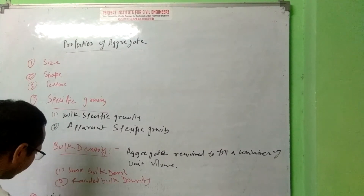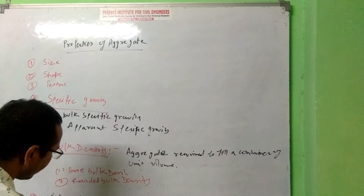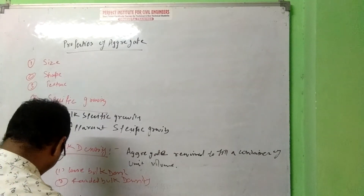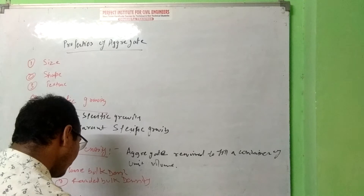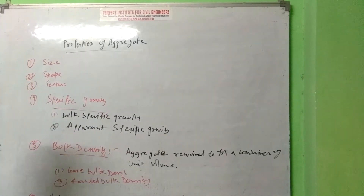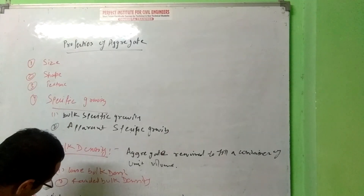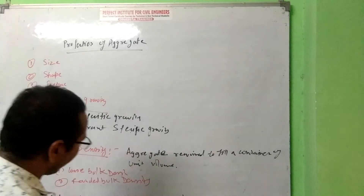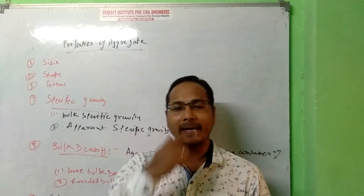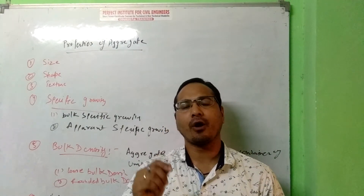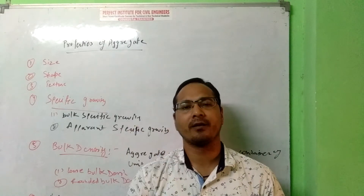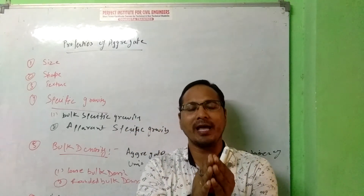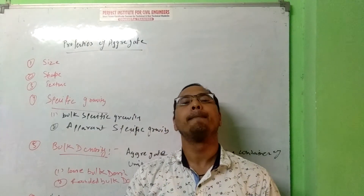The sixth property is water absorption and surface moisture. The seventh property is buckling of sand. Buckling of sand means an increase in the volume of sand due to the presence of surface moisture up to a certain extent — that is called buckling of sand.